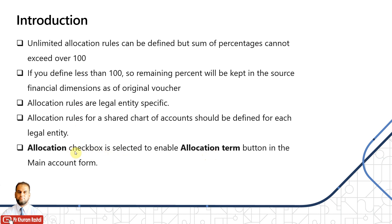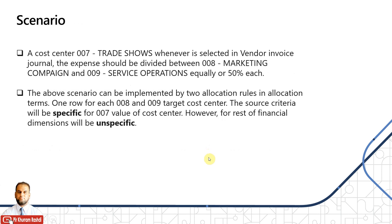If you don't select the allocation checkbox, the allocation terms button will not be enabled. The scenario is: whenever cost center 007 Trade Shows is selected in a vendor invoice journal, the expense should be divided equally between cost center 008 Marketing Campaign and cost center 009 Service Operations — 50% each. We will implement this scenario in our demonstration by defining two allocation rules, each with 50% allocation.